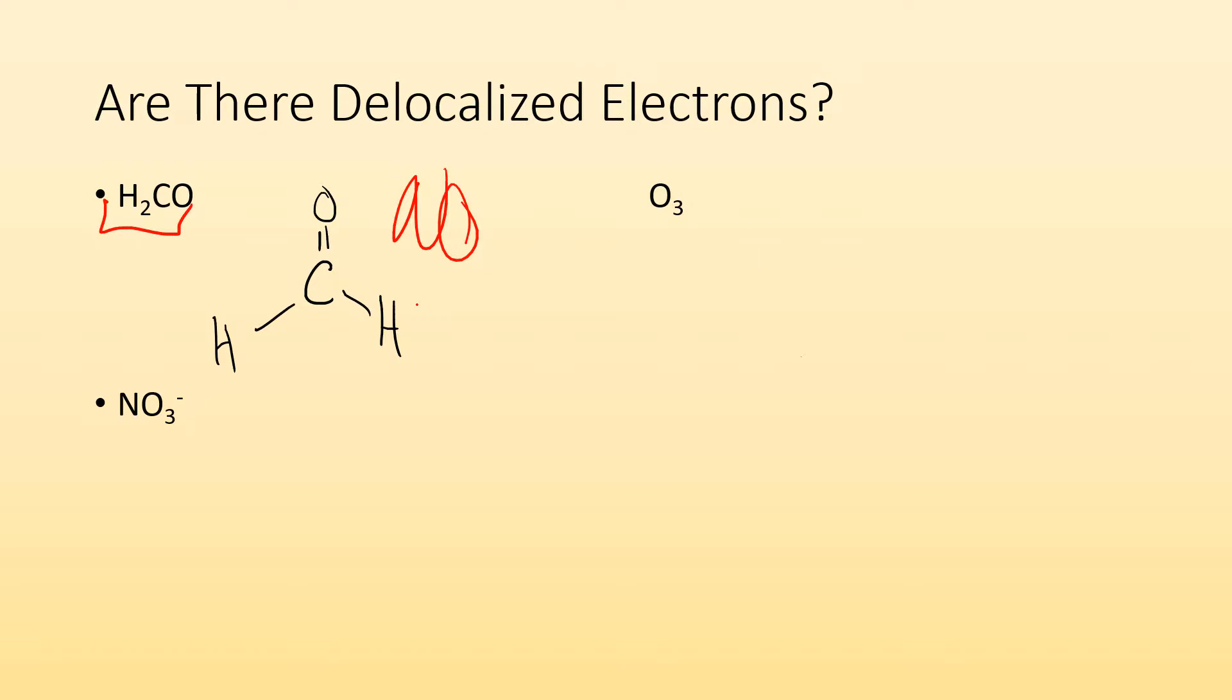All right. If we take a look at ozone, I know ozone has one Lewis structure that looks like this, but hey, wait a minute. Why did I put the double bond between these two oxygens there and not those two oxygens over there?